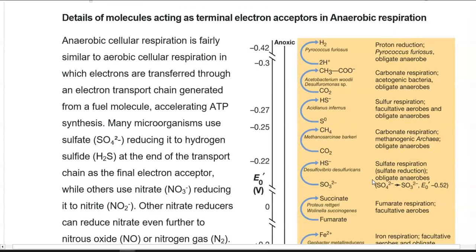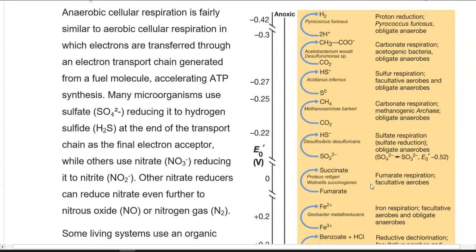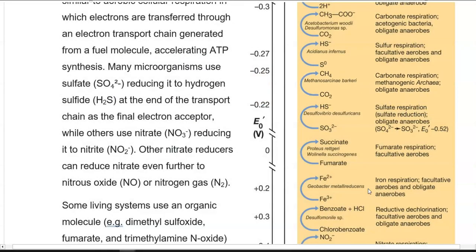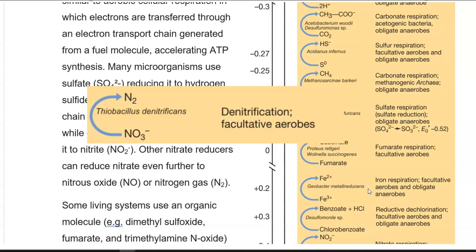Next, we look at the details of various compounds acting as terminal electron acceptors under anaerobic respiratory conditions. Anaerobic cellular respiration is fairly similar to aerobic in that electrons are transferred through an electron transport chain generated from fuel molecules such as glucose or fumarate, accelerating ATP synthesis. Many microorganisms use sulfate, reducing it to hydrogen sulfide. Some organisms use nitrate, reducing it further to nitrous oxide and finally to nitrogen gas. These are referred to as denitrifying bacteria, which play an important role in the nitrogen cycle.